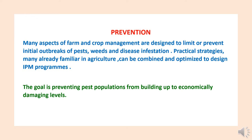Prevention. The prevention mechanism is designed to limit or prevent initial outbreak of pests, insects, weeds and disease infestation. There are practical strategies familiar in agriculture that can be combined and optimized to design integrated pest management programs. The goal of prevention is to prevent pest populations from building up to economically damaging levels, so by following the principles of prevention we can check the development of insect pests before they reach the damage level.